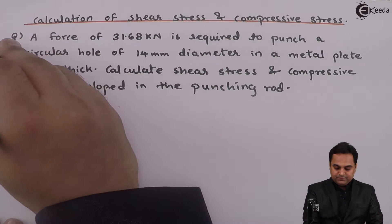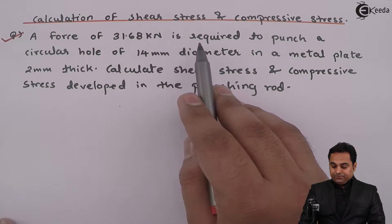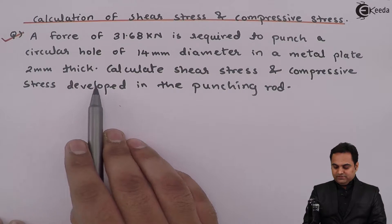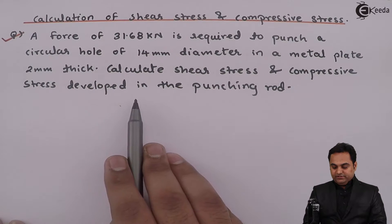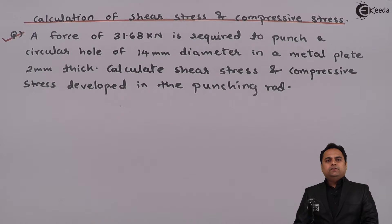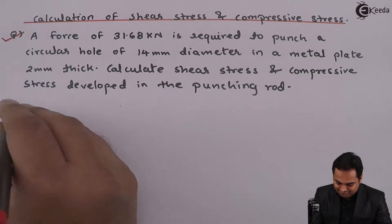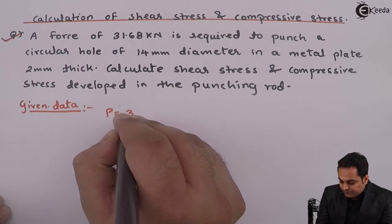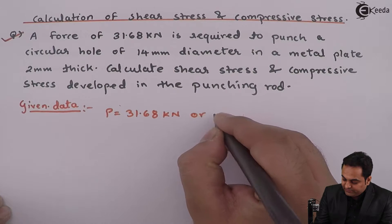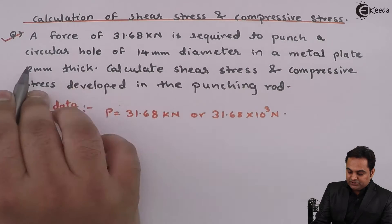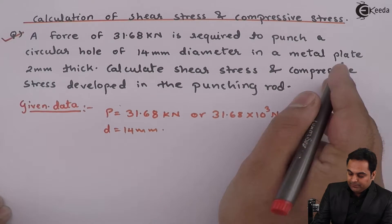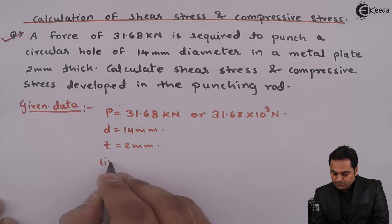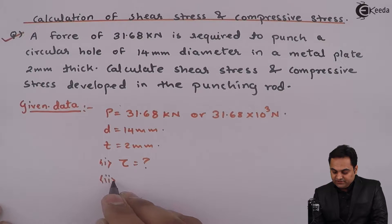Here we have a question. A force of 31.68 kN, which we can also write in Newtons, is required to punch a circular hole of 14 mm diameter in a metal plate 2 mm thick. Calculate shear stress and compressive stress developed in the punching rod. Shear stress is denoted by tau and compressive stress is denoted by Sigma suffix C.